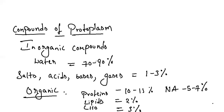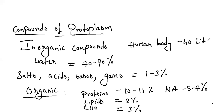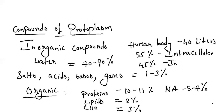Out of all, water will be 95 percent — free water — and 5 percent will occur in a bounded form in the body. In total body weight, 65 to 70 percent is water. In the human body, we have around 40 liters of water, of which 55 percent is intracellular and 45 percent is extracellular.